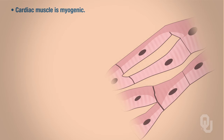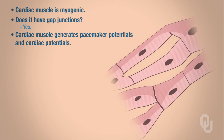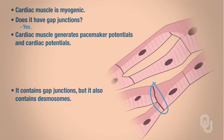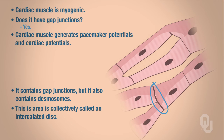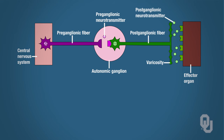Cardiac muscle is myogenic. So if it's myogenic, is it going to have gap junctions? Absolutely. Cardiac muscle will also generate pacemaker potentials and cardiac potentials, which we will talk about later. What's this little area I have circled here on this diagram? It contains gap junctions, but it also contains desmosomes. So collectively, what do we call this area? An intercalated disc.